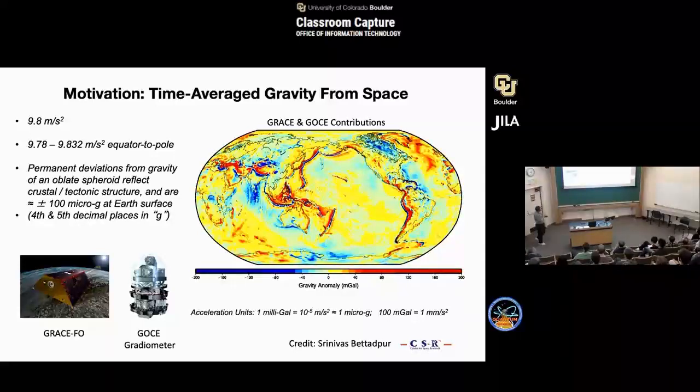From the equator to the pole, it goes from about 9.78 to 9.832. It varies due to the fact that planet Earth is not a sphere. There are a lot of modifications due to the inhomogeneities on the Earth. The principal contributions come in at about 100 micro-g at the Earth's surface. These GRACE and GOCE contributions are just wonderful, purely classical measurement devices.